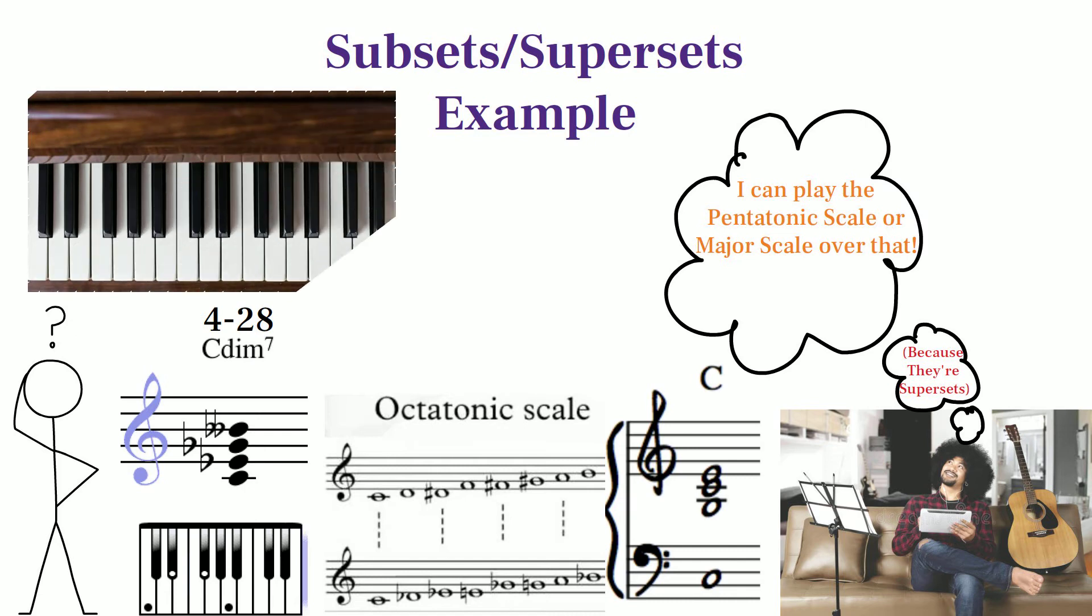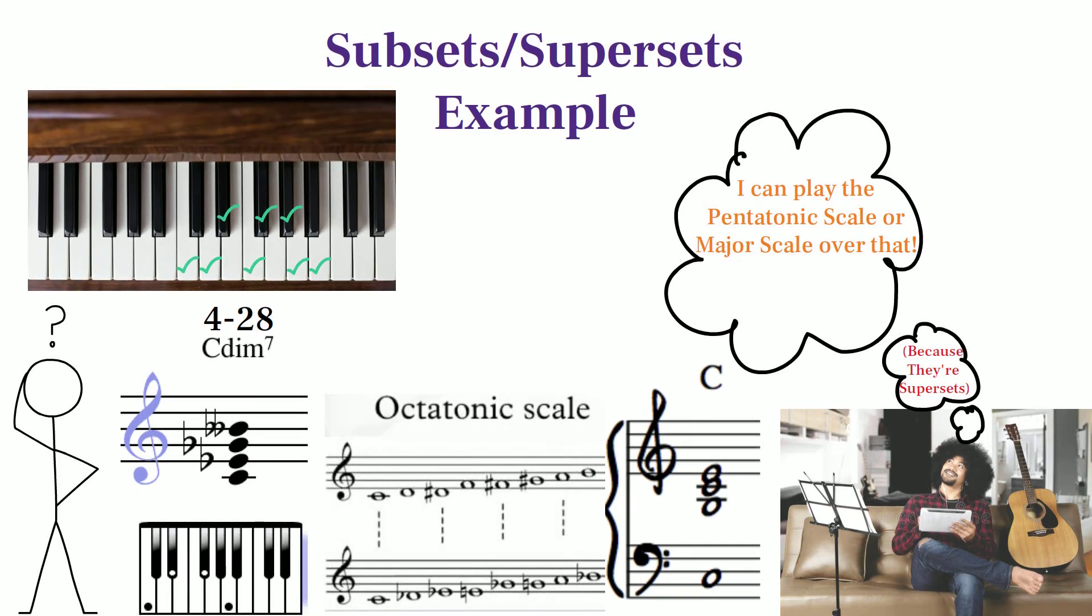Interestingly, not only does the octatonic scale contain two diminished chords as a subset, it is also the complement of the diminished chord. There are of course several supersets that contain the fully diminished chord, and my friend ended up using a subset of the octatonic scale, 7-31. Sets are very interconnected in their relationships to each other as subsets and supersets.